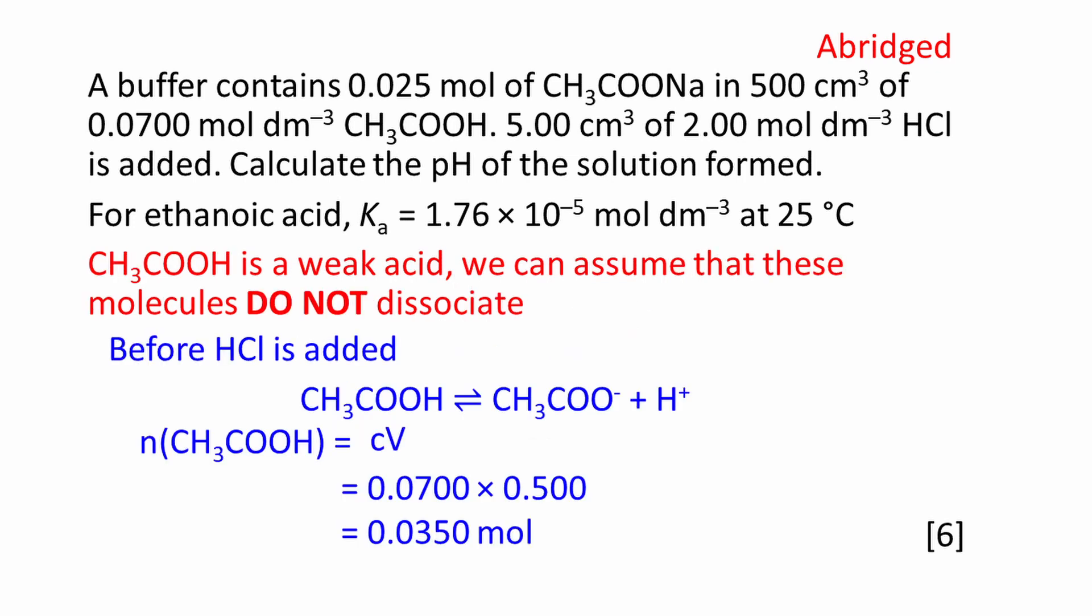Ethanoic acid, CH3COOH, is a weak acid. We can assume that these molecules do not dissociate. Before the HCl is added, we can work out the amount of ethanoic acid using concentration multiplied by volume. This works out to be 0.0350 moles.